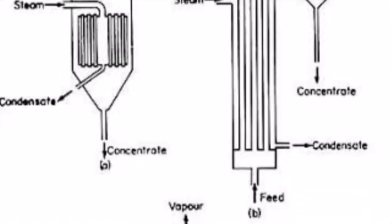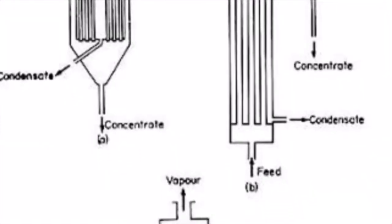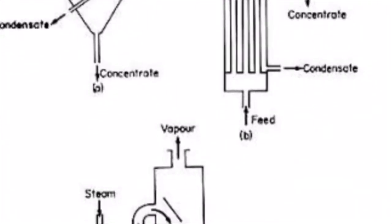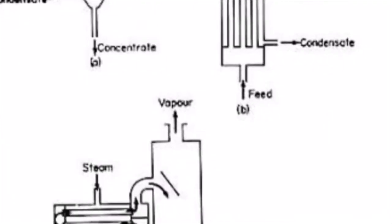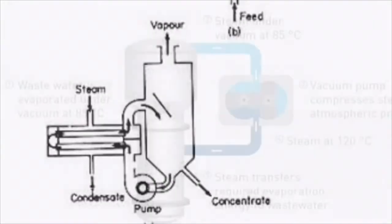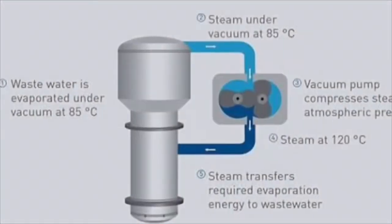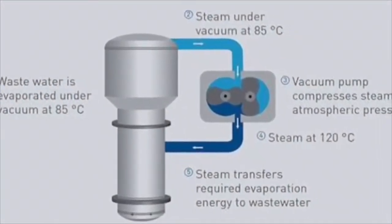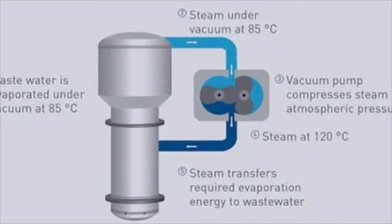The concentration and separating section removes the vapor being produced from the solution. The condenser condenses the separated vapor. Then the vacuum or pumps provide pressure to increase circulation.